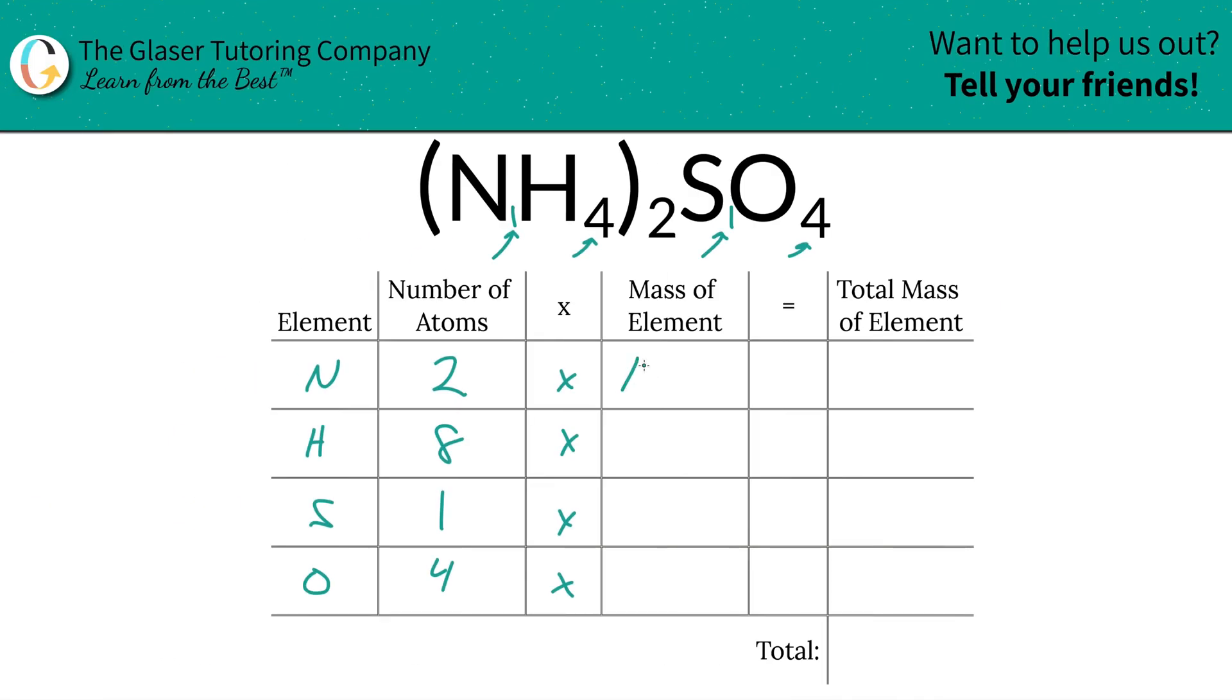All right, so either you got to memorize them or you're going to need the table to look up those values in order to do this. Okay, so we write them down and then we're simply going to multiply the row on across now to find the total mass of each element in the compound.